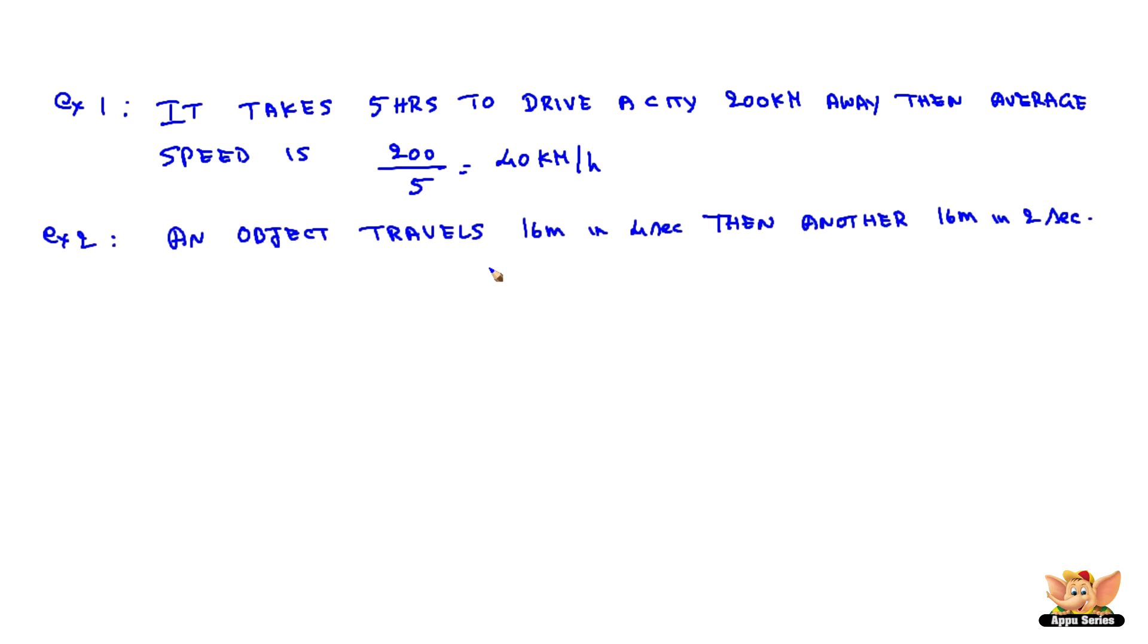Example 2: An object travels 16 m in 4 seconds, then another 16 m in 2 seconds. What is the average speed? Total distance travelled, which is 16 m plus 16 m, divided by total time taken, 4 plus 2 seconds, which becomes 32 m by 6 seconds, which is 5.33 m per second.